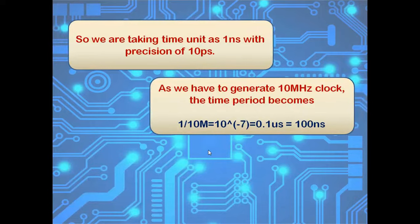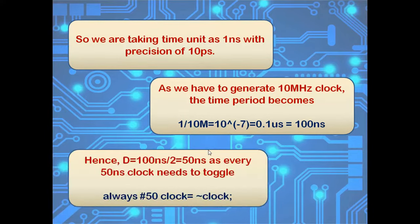In the question, it's being asked to generate 10 MHz clock. So, the time period becomes 1/10M, that's equal to 0.1 microsecond or 100 nanosecond. For this time period, the clock needs to toggle every 50 nanoseconds, time period divided by 2.